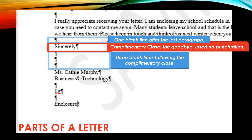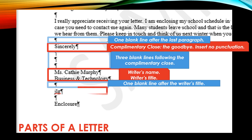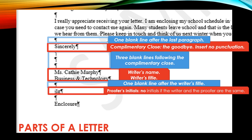Then you will leave three more blank lines after the complimentary close. This is for the signature of the person who is sending the letter. In this case, it is coming from Ms. Kathy Murphy. Notice that the person has a writer's name and also a writer's title, followed by a blank line. The writer's or the proofer's initials will be placed after the writer's title. However, if the writer and the proofer are the same, there is no need for proofer's initials — it would just be left blank.